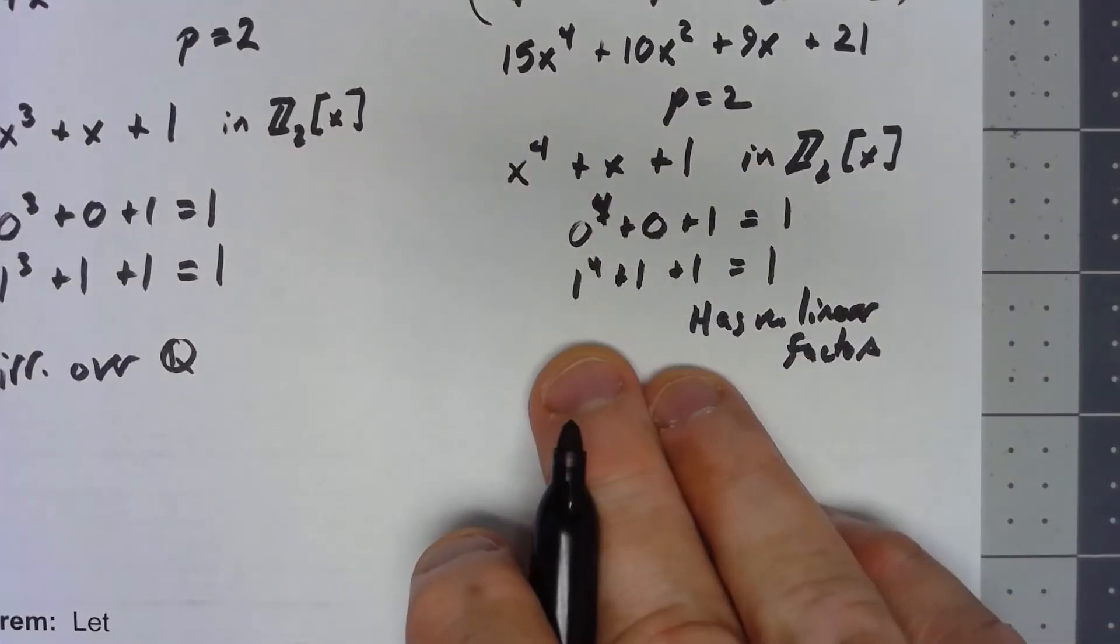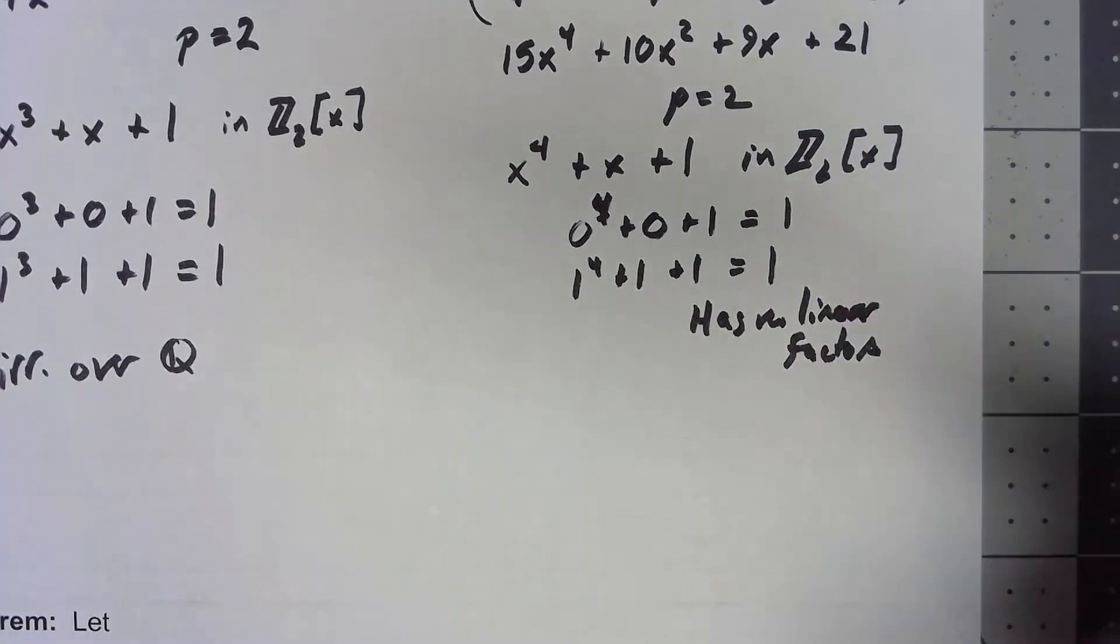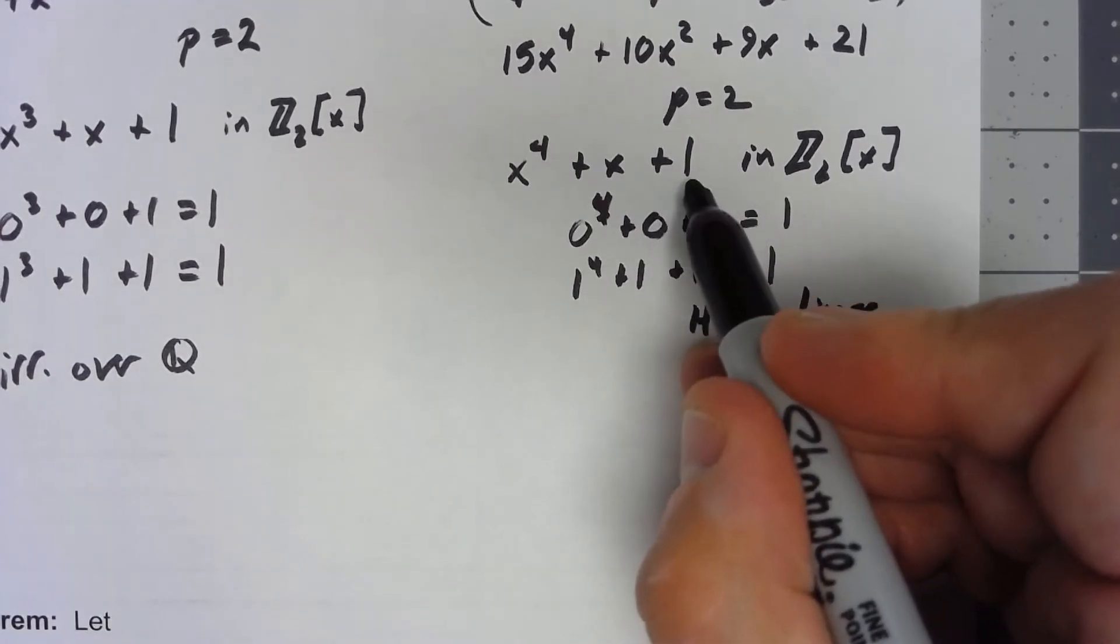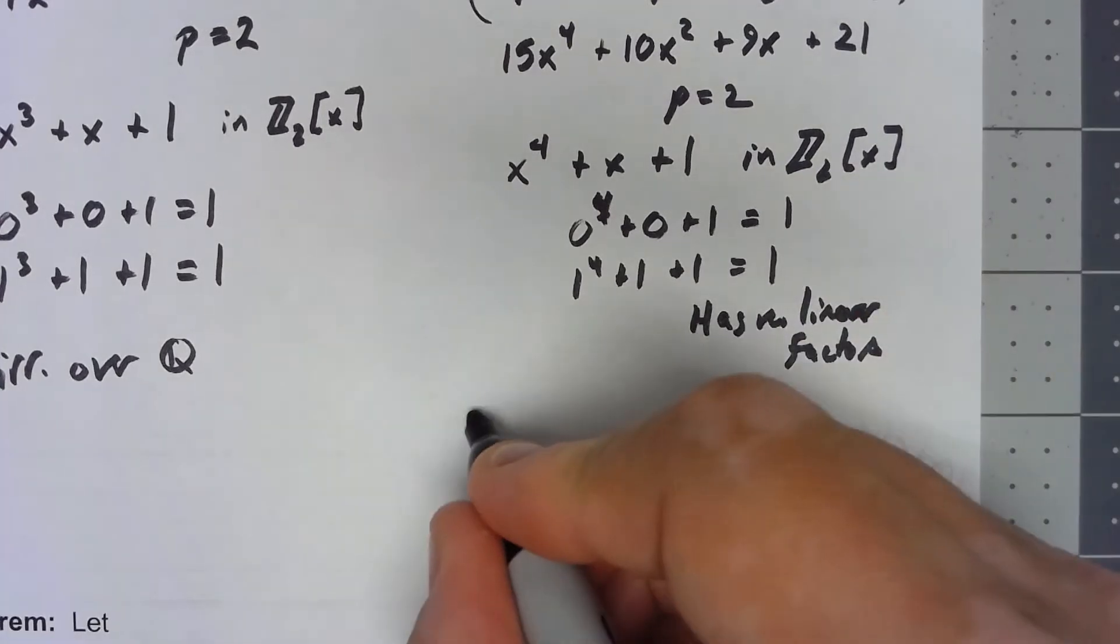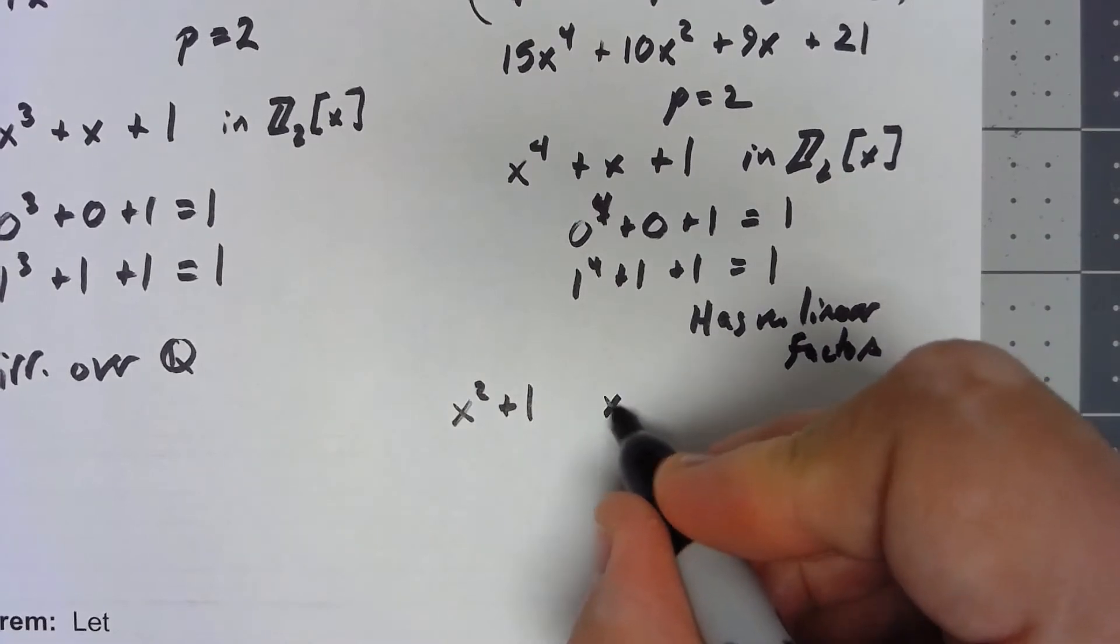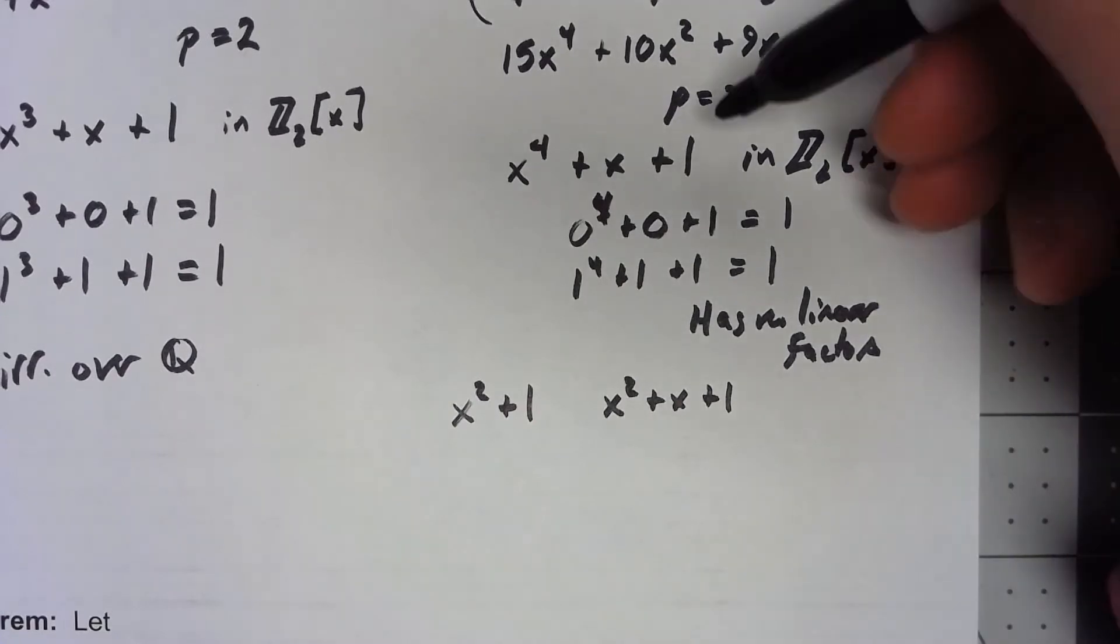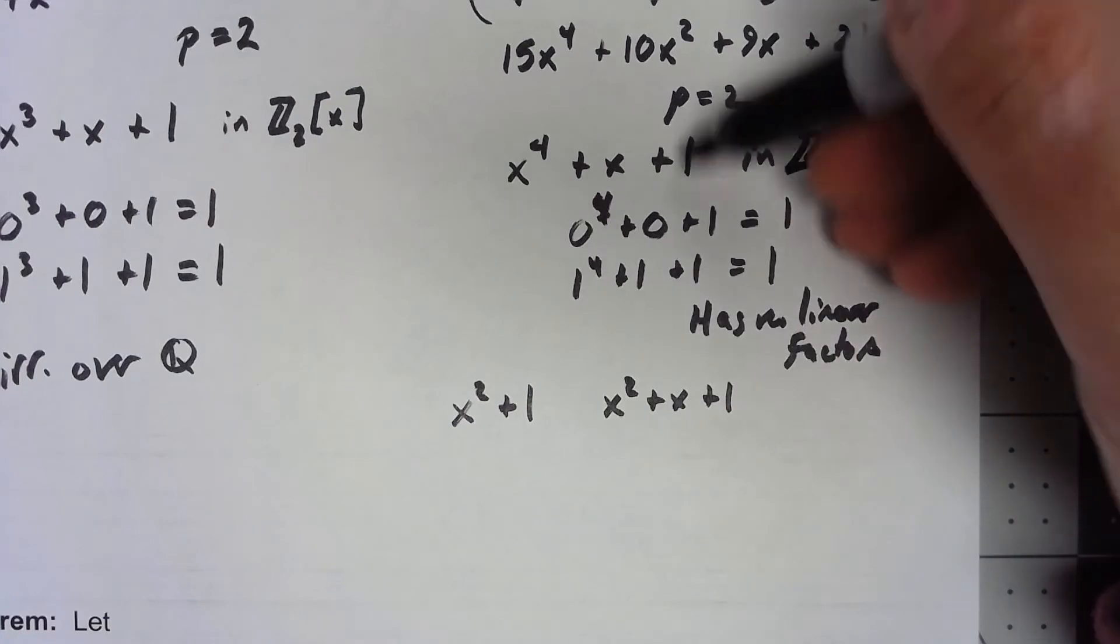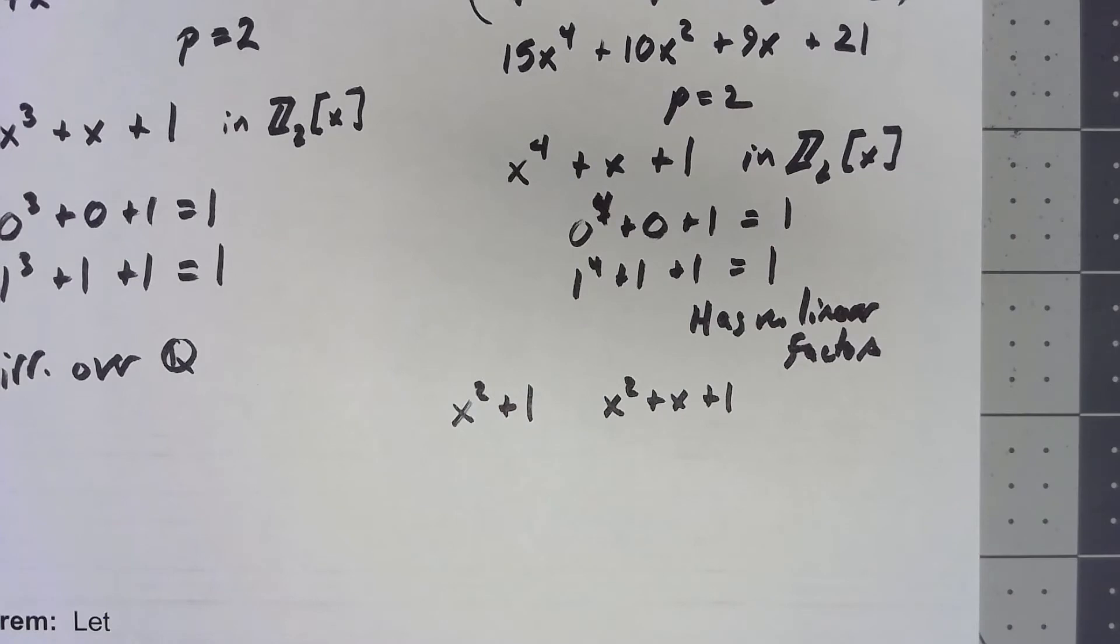So if this thing factors, it must have a quadratic factor. Now because we're doing this in Z₂, there are really only two possibilities: it could be x² + 1, or it could be x² + x + 1. It has to have the plus 1 because of the plus 1 here. If we didn't have a plus 1 on the quadratic, there's no way we could get a plus 1 for our final product.